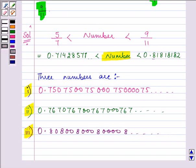And there can be a lot many numbers that you can think of. But it should be more than 0.714 and so on and less than 0.80 and so on. So I hope you enjoyed the session and try to find out more numbers. Bye for now.